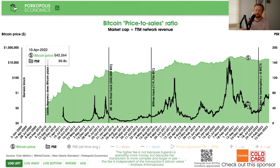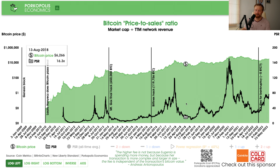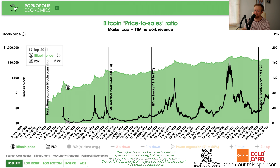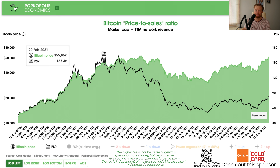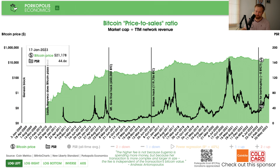If we just look at this generally to understand where we are: a number like 75 seems to be on the higher side, because in the crypto winter we were down to like 5, 6, 7X. In early 2011–2012 it was 6X, 5X, 2X, even 1X — meaning trailing 12-month miner revenue in dollar terms equaled the Bitcoin market cap at that time. Whereas looking at the booms: 100X in 2017, and 170X in 2021. So we are below those peaks, but 75X does seem kind of high.